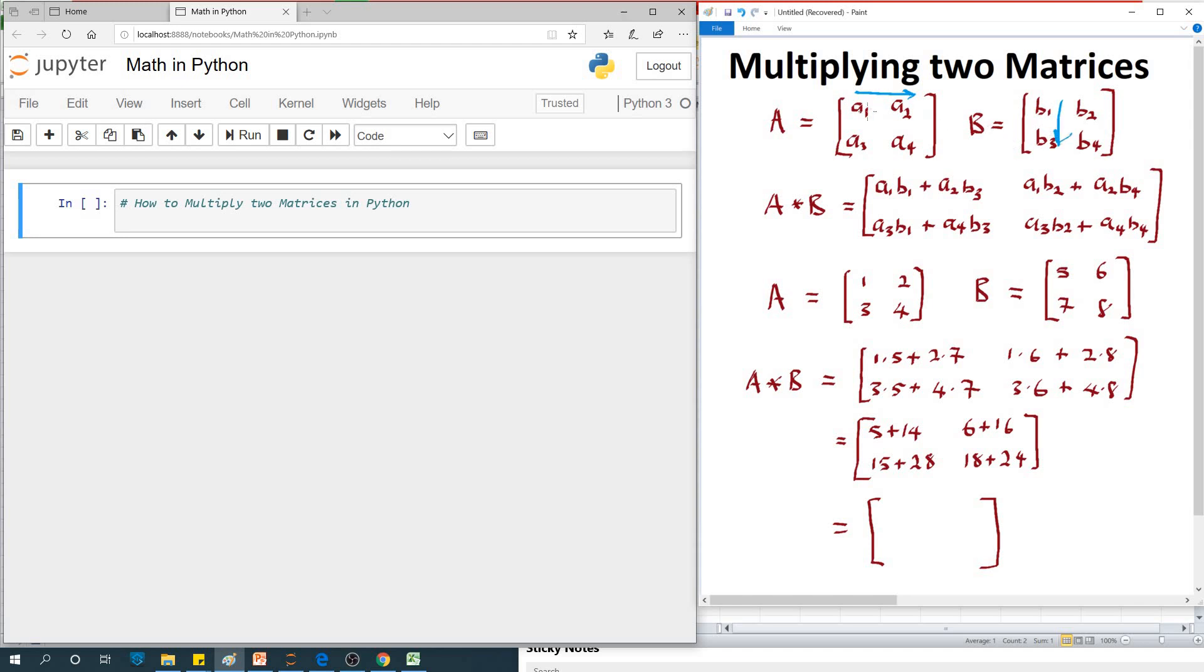So you are saying a1 times b1, a2 times b3 - that is what we have here. You do the same thing this way and this way as well to get what is in this place.